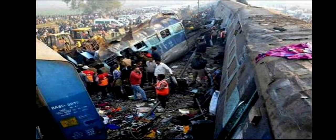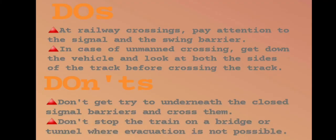Rail accidents result in a huge number of people losing their lives. Do's at railway crossings: pay attention to the signal and the swing barrier. In case of an unmanned crossing, get down from the vehicle and look at both sides of the track before crossing. Don'ts: Don't go underneath closed signal barriers and cross them. Don't stop the train on a bridge or tunnel where evacuation is not possible. These are precautions to take when using railways.